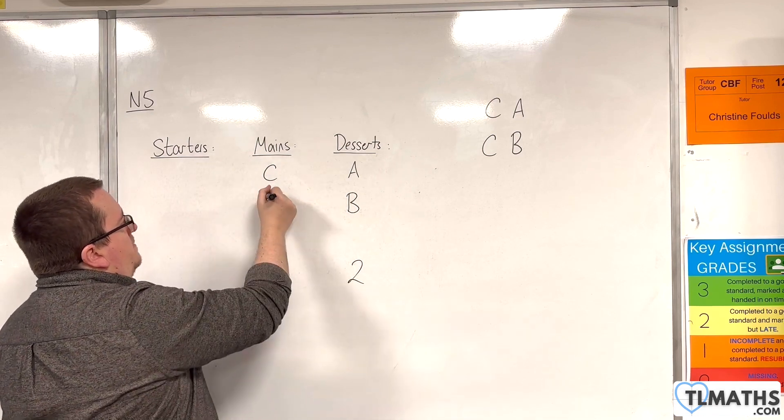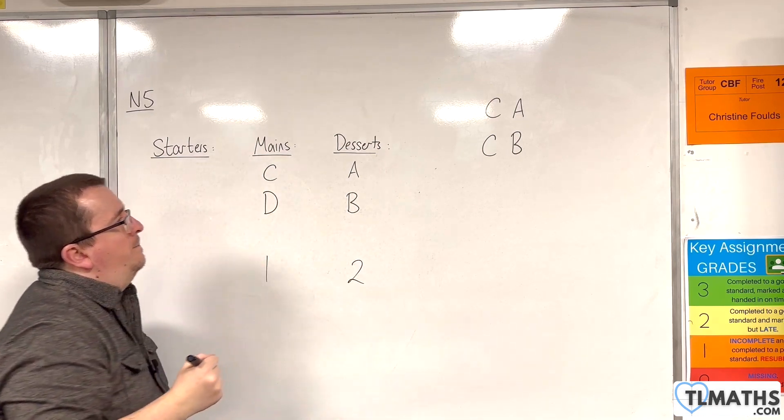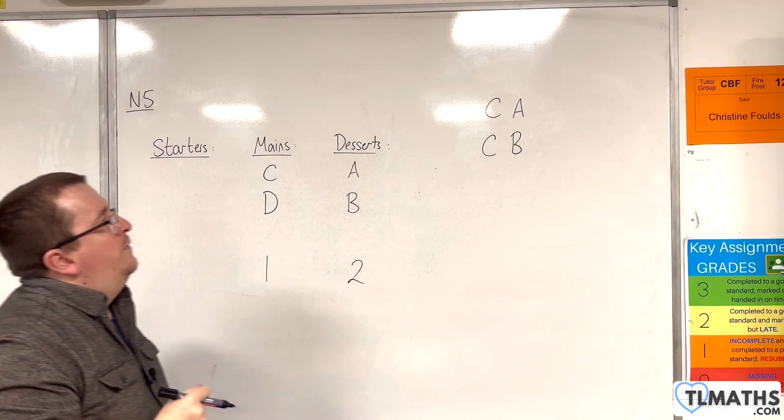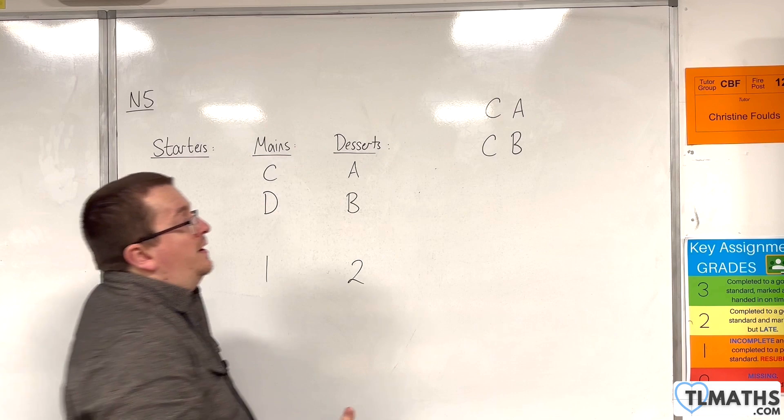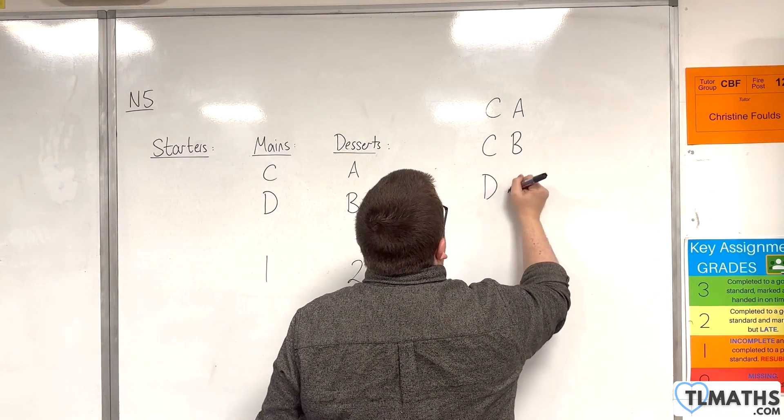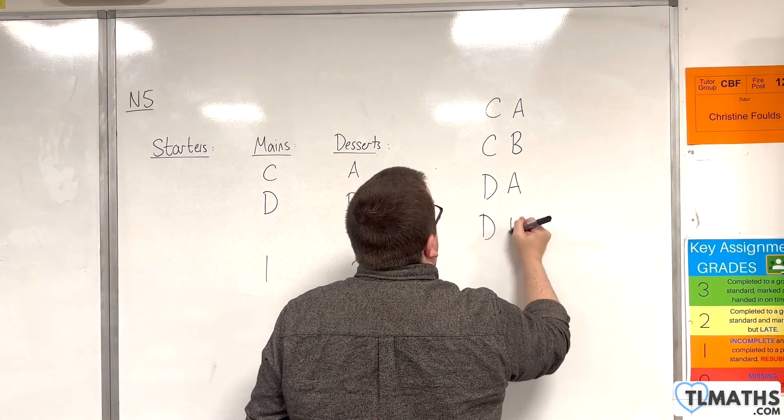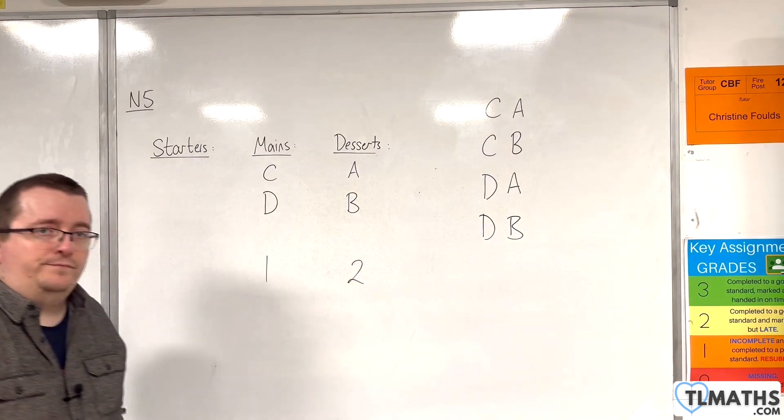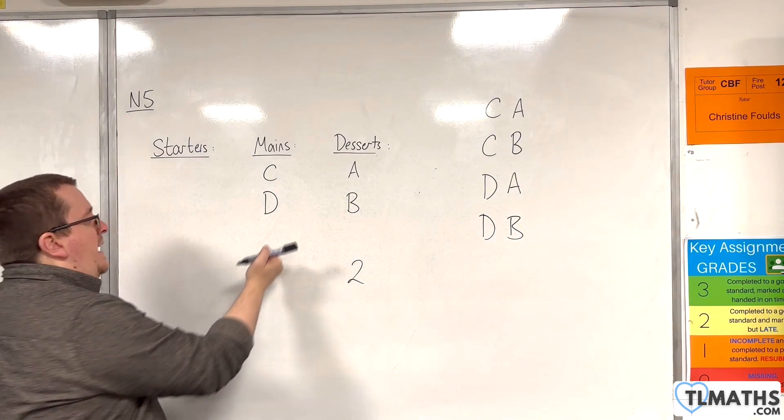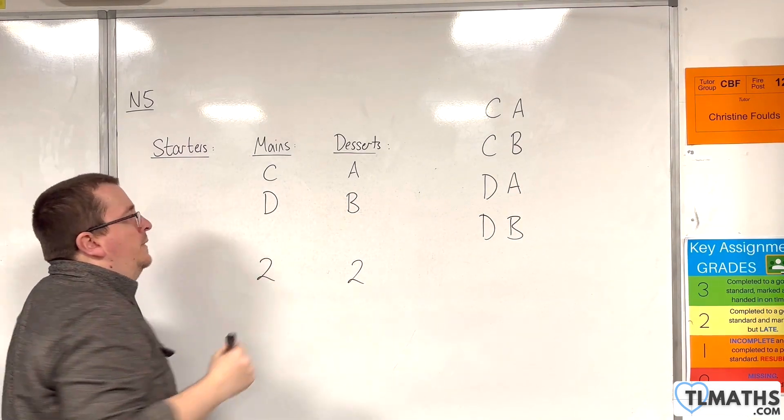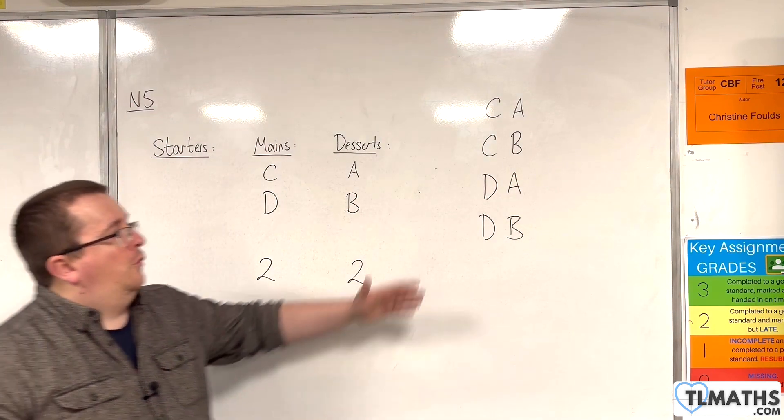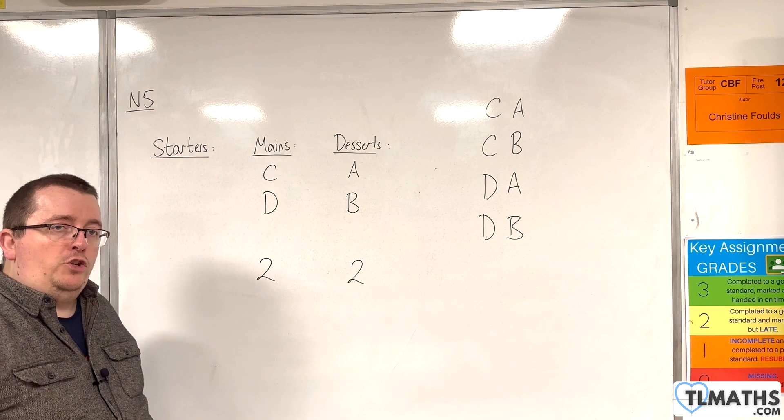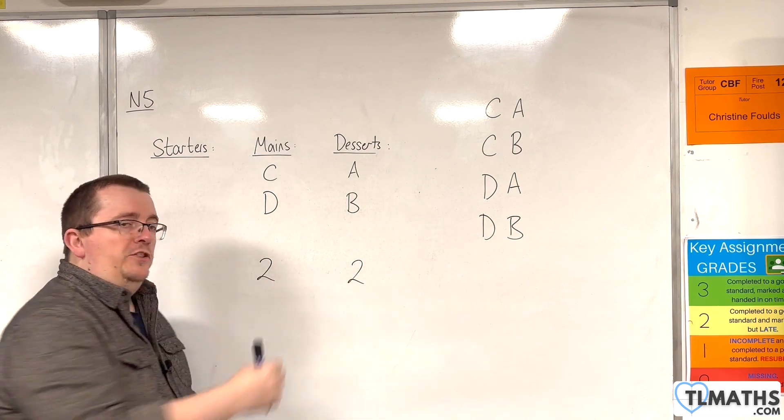So, let's say we had another main. Let's call it D. Now, we've got C, then A, and C, then B. So, then we could have D, then A, and D, then B. So now we've got two mains and two desserts. So, we've got four possible combinations. Two times two is four.